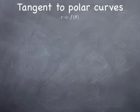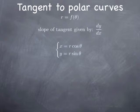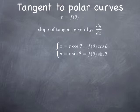The polar curves we're looking at are of equation r equal f of theta, and the slope of the tangent in the xy-plane is still the rate of change of the y-coordinate with respect to the x-coordinate, so dy over dx. Because we are in polar coordinates, x is r cosine theta and y is r sine theta. Therefore we can express x and y as functions of theta, because we are along the curve where r is expressed as a function of theta.